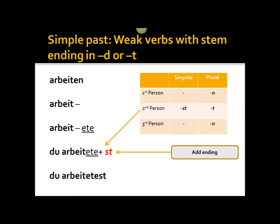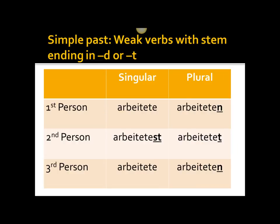Looking at the conjugation: ich arbeitete, du arbeitetest, er/sie/es arbeitete, wir arbeiteten, ihr arbeitetet, sie arbeiteten. This is something you won't use in spoken German — it's a good example of why we avoid the simple past in speech, as it's difficult to pronounce even with the added e. Germans would say "du hast gearbeitet" rather than the simple past form, which is much more pronounceable. You would most likely see this in written form or narrative.